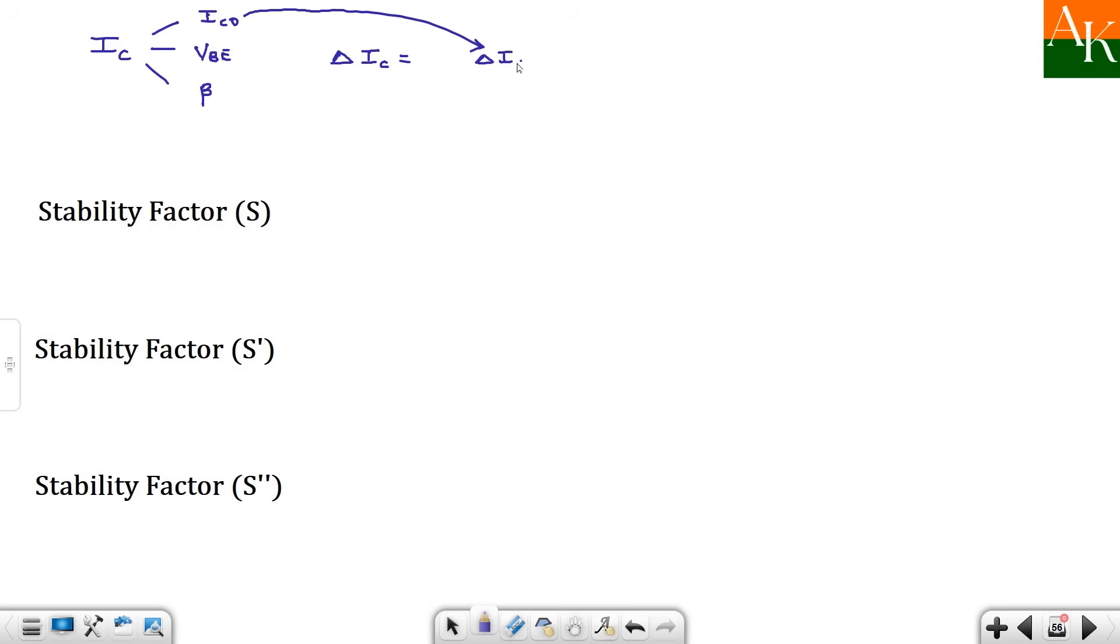So I will write down delta ICO and I will assign a stability factor over here, that is denoted as S. Plus, variation in the collector current maybe due to change in the base emitter voltage. So here you will have delta VBE and I will assign a stability factor S prime over here. Plus, change in the current gain, that is nothing but delta beta, and the associated stability factor is S double dash.